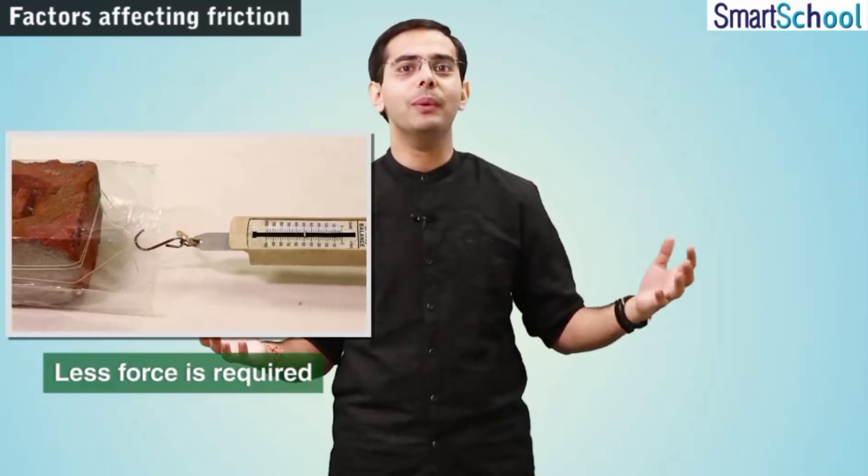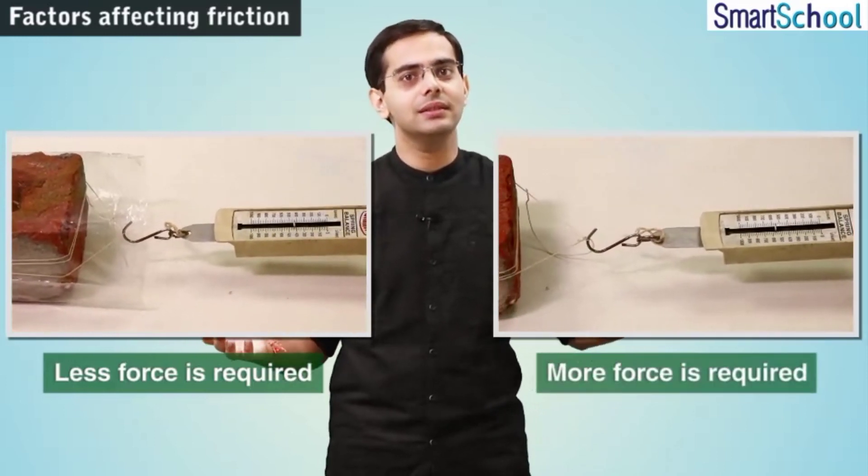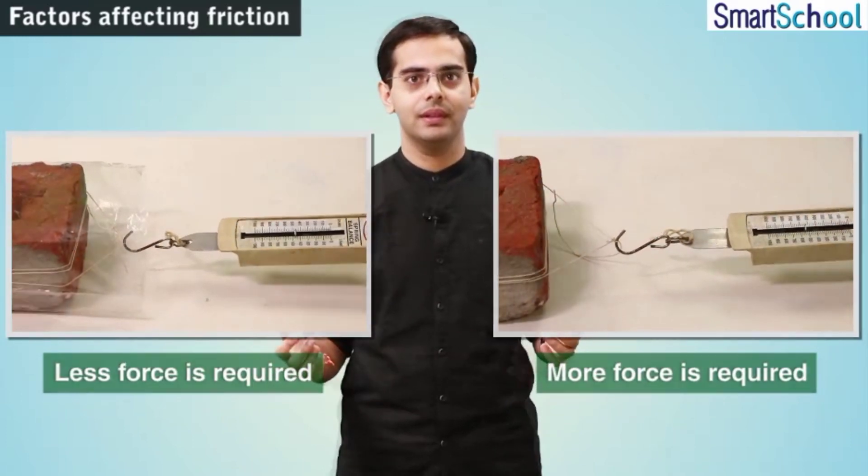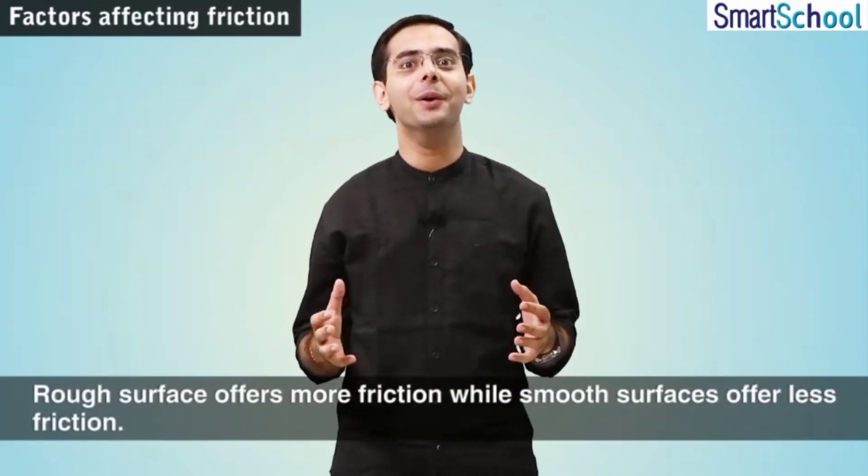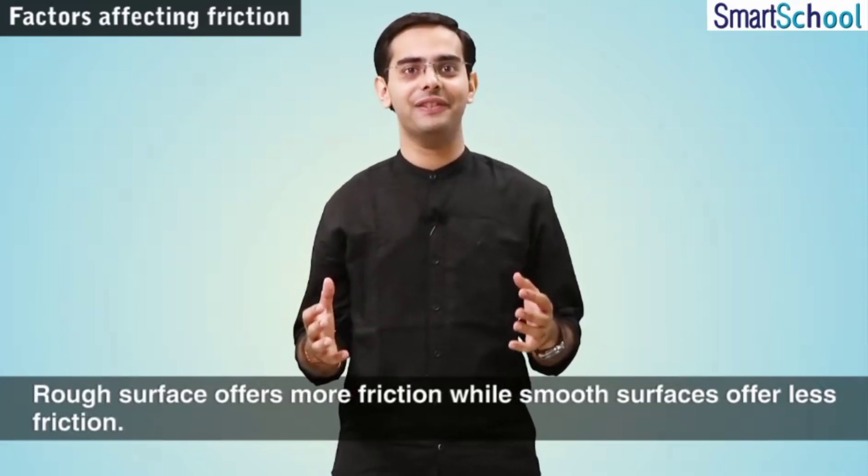Thus, less force is required to move the brick when it is covered with the polythene bag than when it is not covered with it and consequently had a rougher surface area. This shows that rough surfaces offer more friction, while smooth surfaces offer less friction.